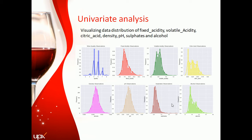Both distributions for fixed acidity and volatile acidity have long positive tails, which makes their mean higher than their medians, making the median a better measure of central value. Both also have a slight bimodal distribution. Citric acid seems to be positively skewed with outliers, so the median would be a better measure; an unusual spike in the graph indicates a few concentrations are higher than others. Density, pH, and sulfate seem to have a normal distribution with little standard deviation, meaning wines have almost similar values, and their mean and median values are almost the same.